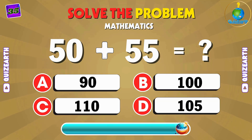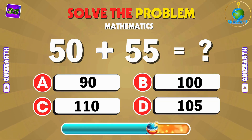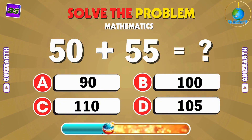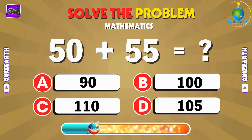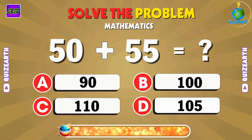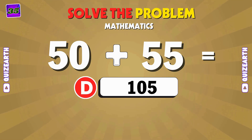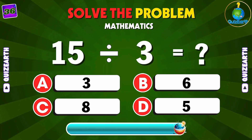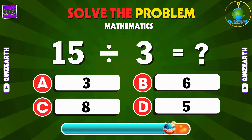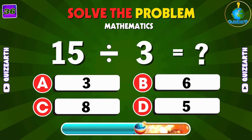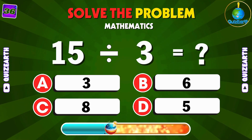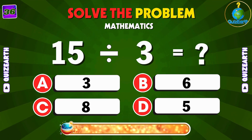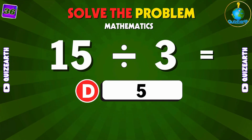Add 50 and 55 — let's see if you get it right. D: 105. Divide 15 by 3 — what's the answer? D: 5.